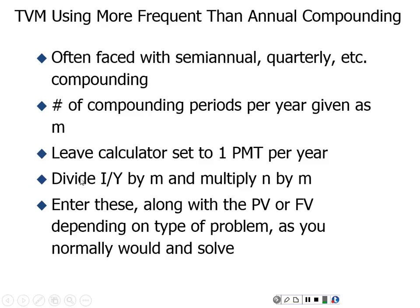The number of compounding periods per year will be represented by M. We leave our calculator set to one payment per year, divide the interest rate by M, and multiply N by M. So if we have semi-annual compounding, M equals 2 — we're changing our inputs to six-month increments instead of annual increments, and we solve it just like normal.